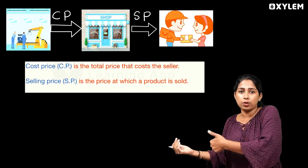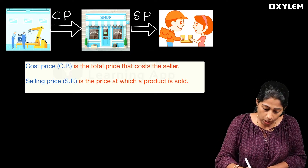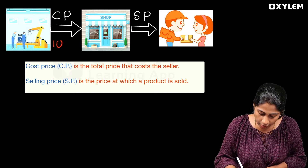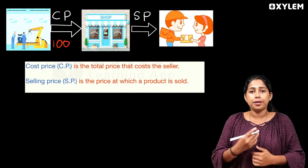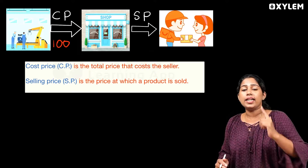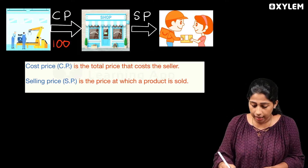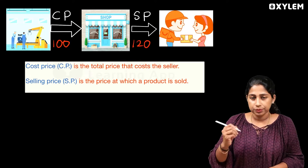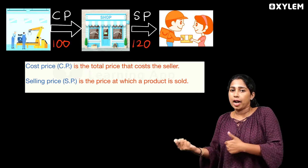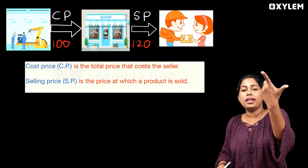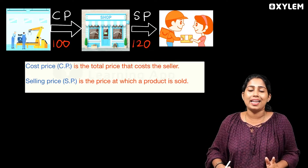For example, I buy a t-shirt for 100 rupees — that is the cost price. Then I sell it at a higher price. That difference is the profit.